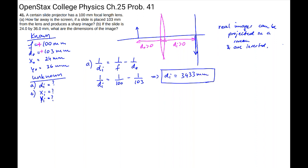Now in part b, we're looking for the image height and image width. So we can use the magnification equation, which says that m is negative di over do. So we're trying to figure out the magnification of the lens. And that's going to be negative 3433 divided by do, which is 103. So the magnification is negative 33.33.